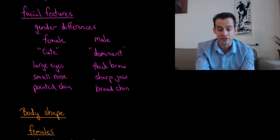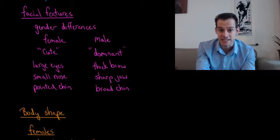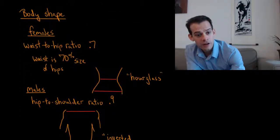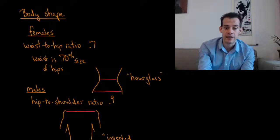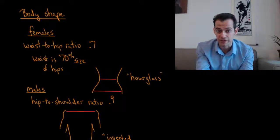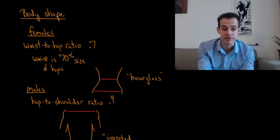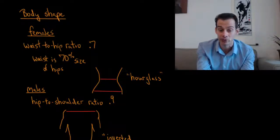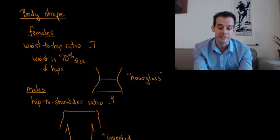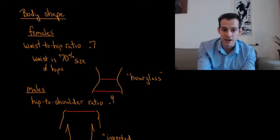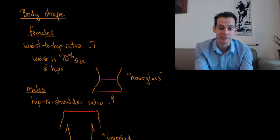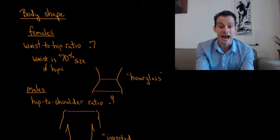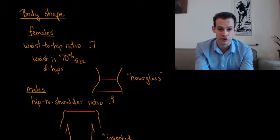Now body shape is also part of what we judge as physically attractive. And one sort of universal law that seems to arise in investigating which body shapes are seen as attractive. In females, it seems to be the case that a waist to hip ratio of about 0.7 is considered to be very attractive. So it's not about the specific size of the waist or the hips, but rather that the waist is about 70% the size of the hips. And this is related to the sort of classic hourglass figure that's seen as attractive in females.